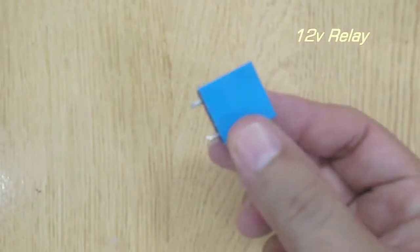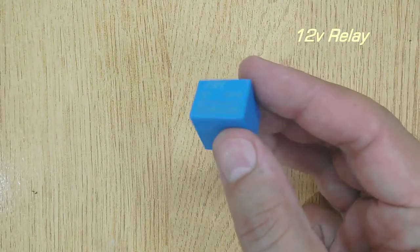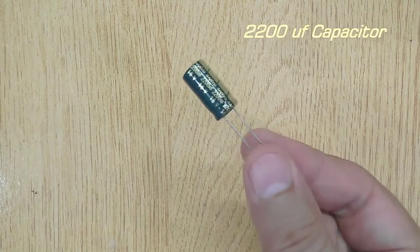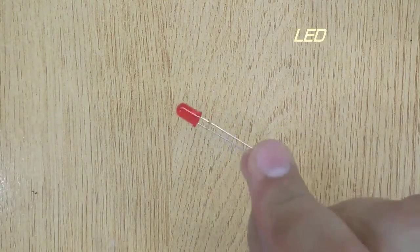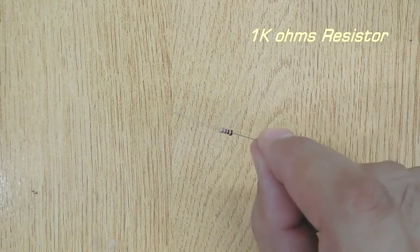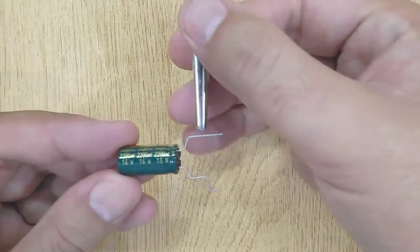For this LED flasher you will need a 12-volt relay, 2200 microfarad capacitor, LED, and 1K resistor. Let's solder the components.